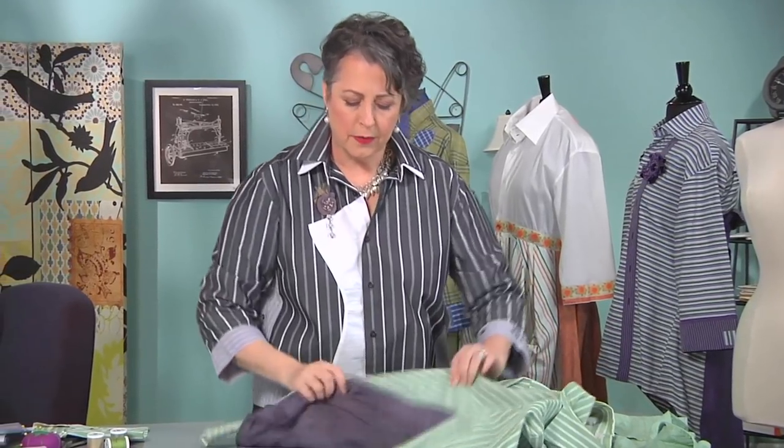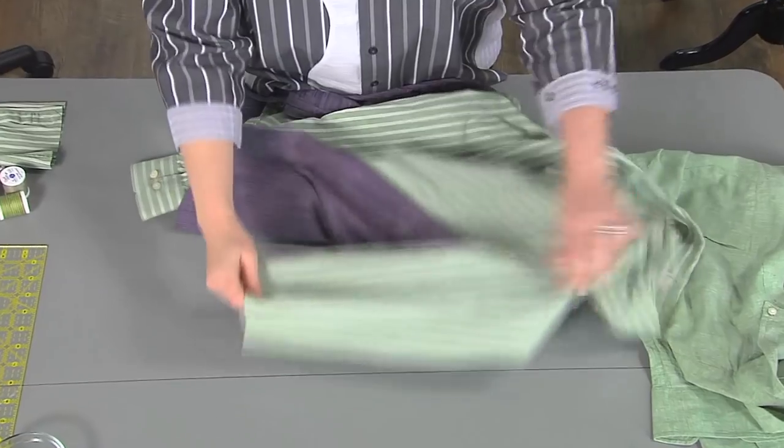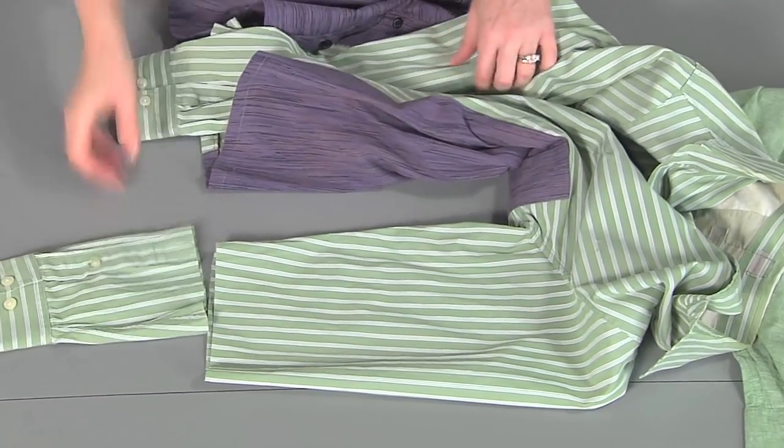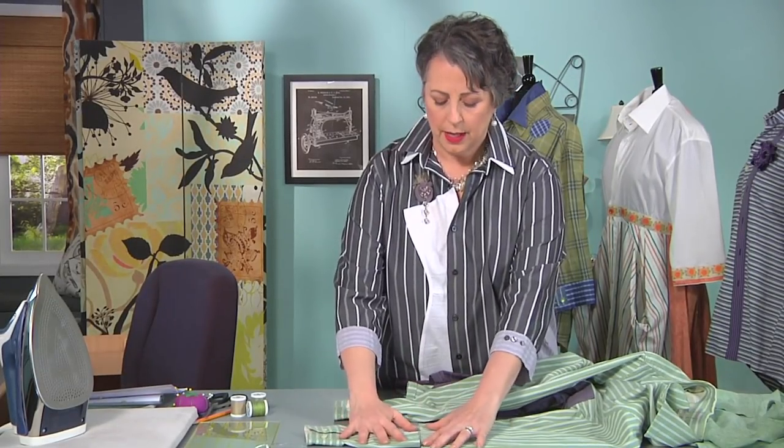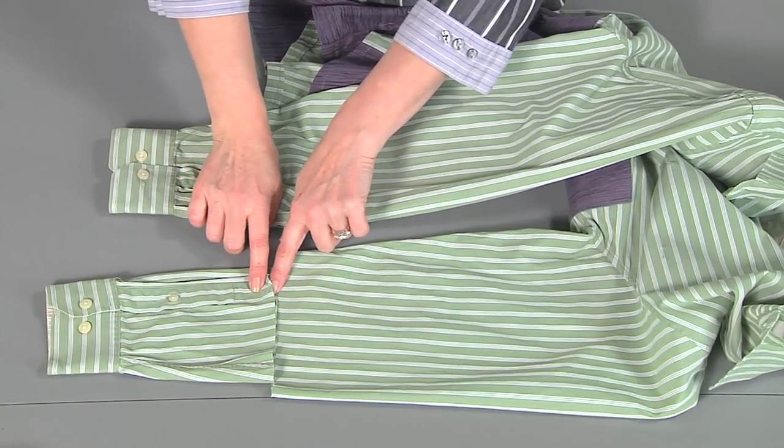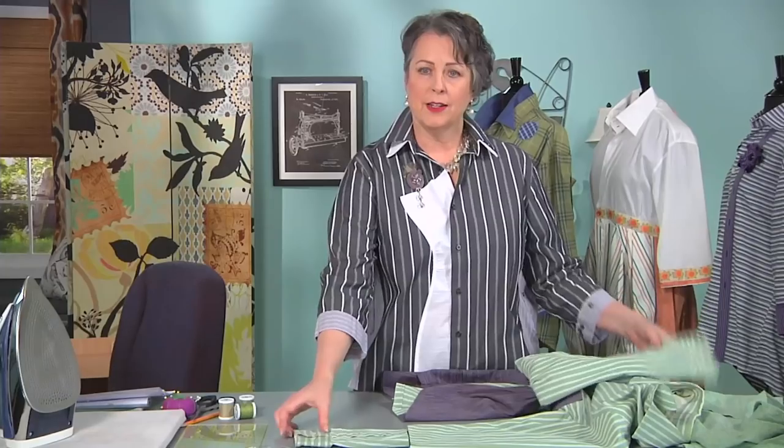You can see that I've already cut part of the sleeve off here, and I want to show you exactly how I did that. I use the same technique. It doesn't matter what size the shirt is. I actually take the sleeve and I lay it out flat, and I cut it off right at the top of the placket for the sleeve, just straight across.